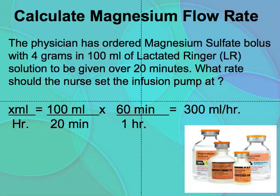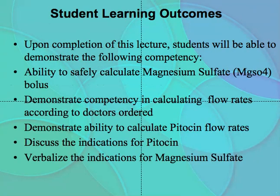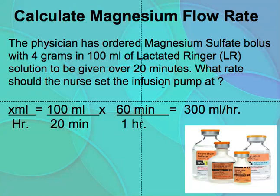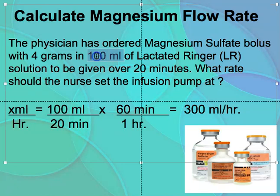The first problem: calculating magnesium sulfate flow rate. The physician has ordered a magnesium sulfate bolus with four grams in a hundred milliliters of lactated Ringer's solution to be given over 20 minutes. What rate should the nurse set the infusion pump? We're looking for x mL per hour. We are giving 100 mL containing 4 grams, to be infused in 20 minutes.